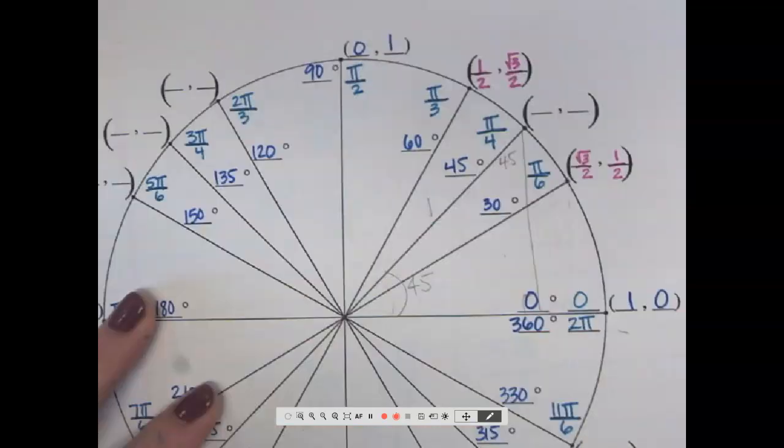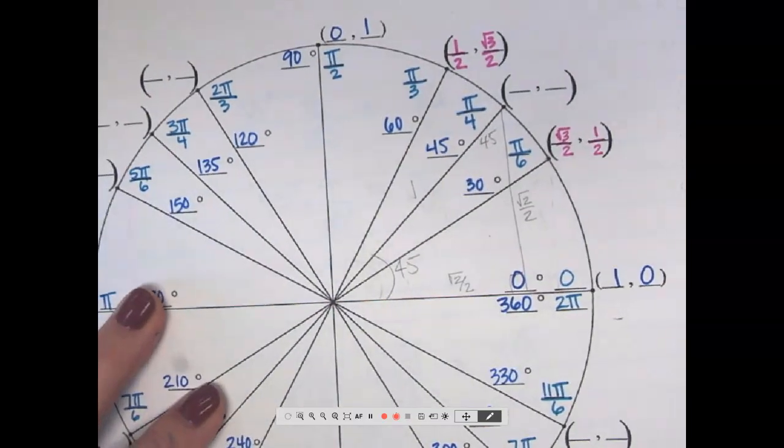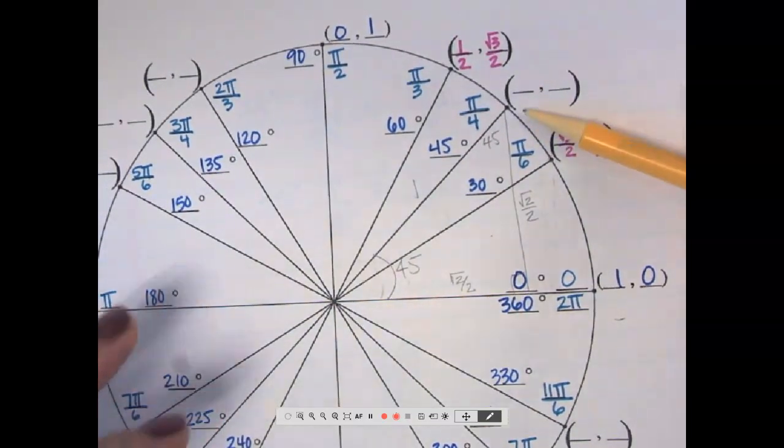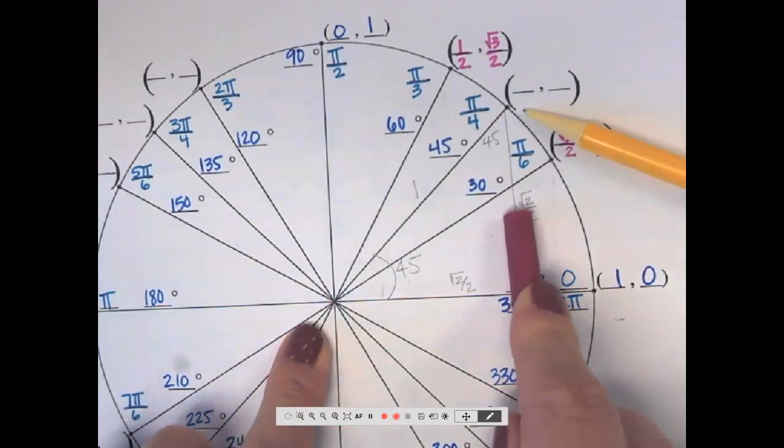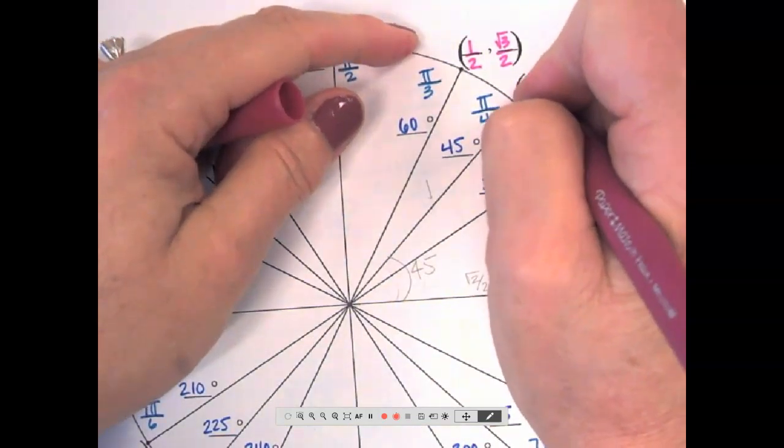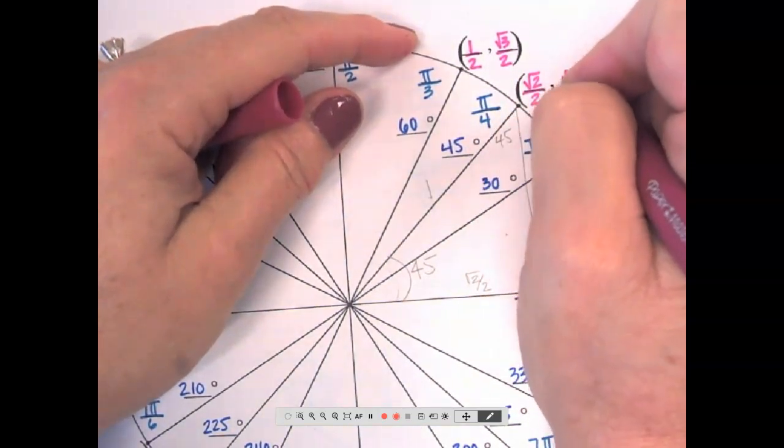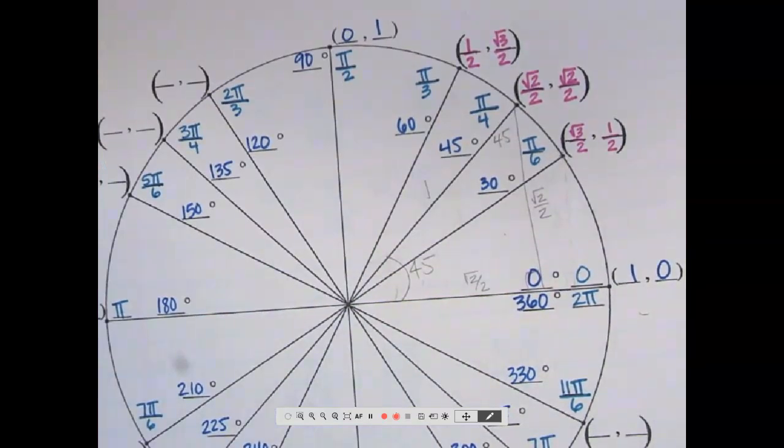And to get to this ordered pair, I would go right square root of 2 over 2, up square root of 2 over 2, making this ordered pair square root of 2 over 2, square root of 2 over 2. Not necessarily pretty numbers, but that's what they are. We just have to deal with it. Any questions on those three ordered pairs?